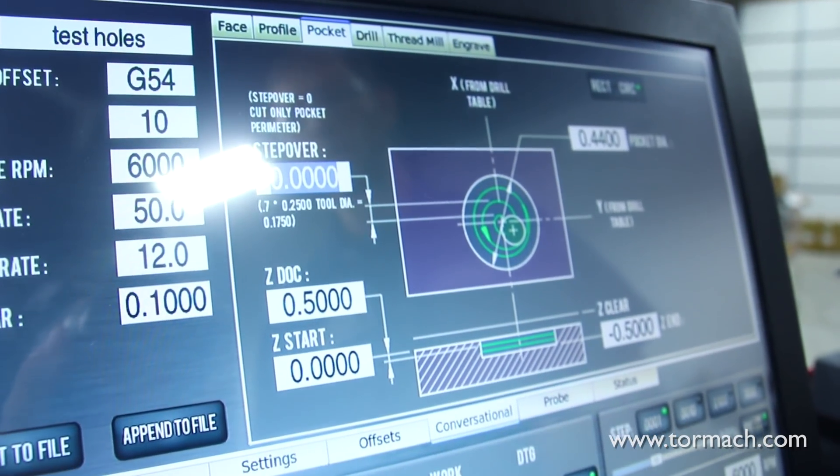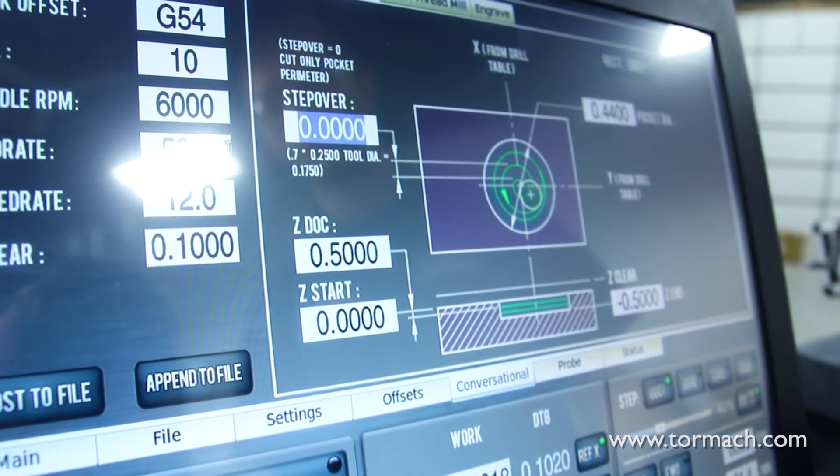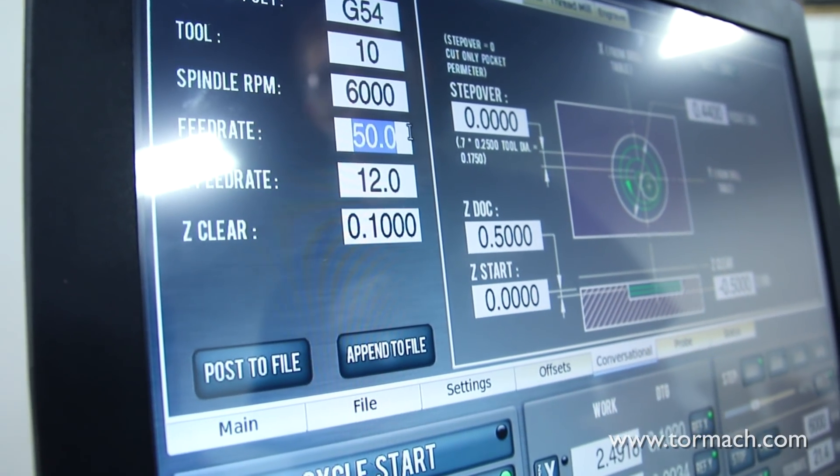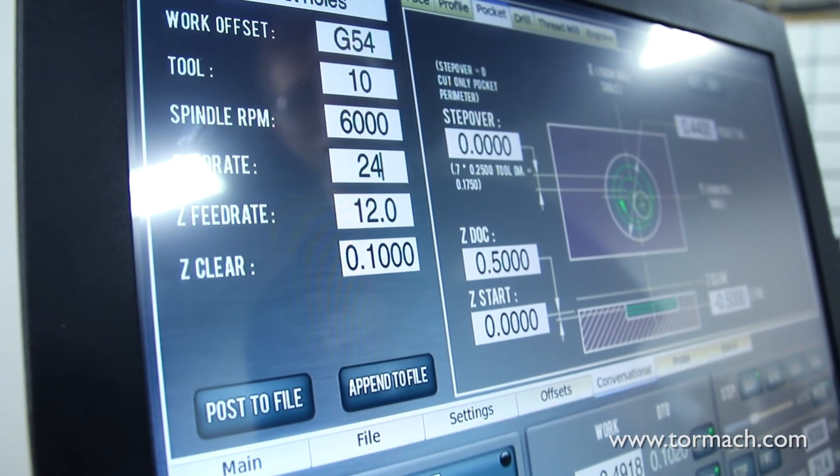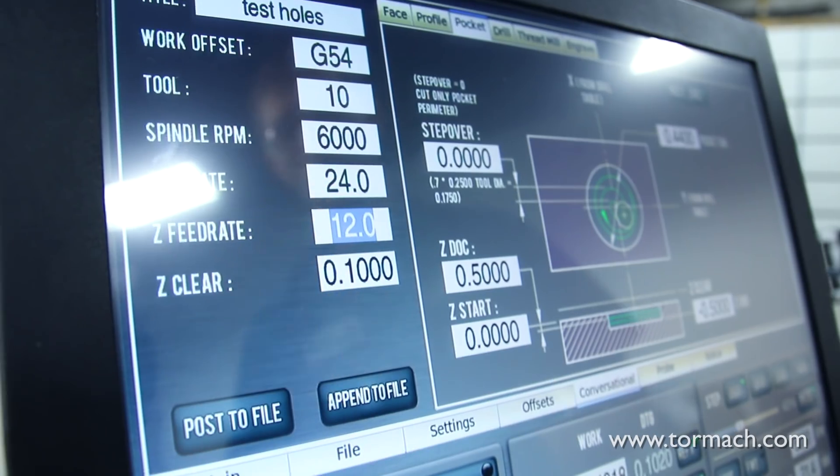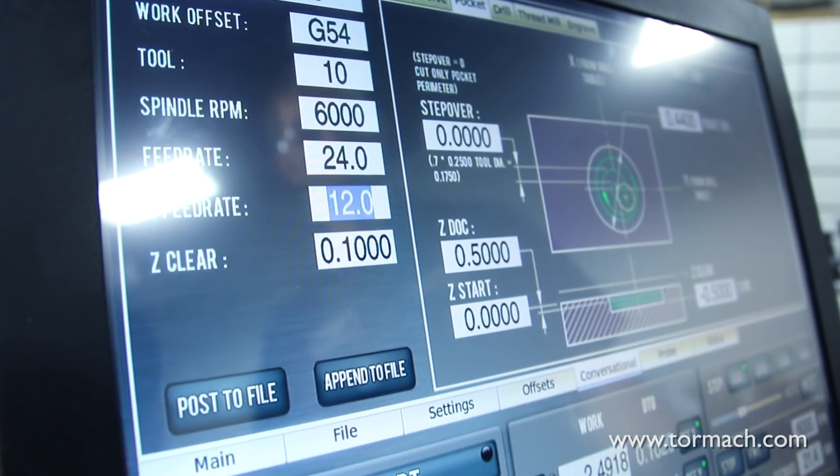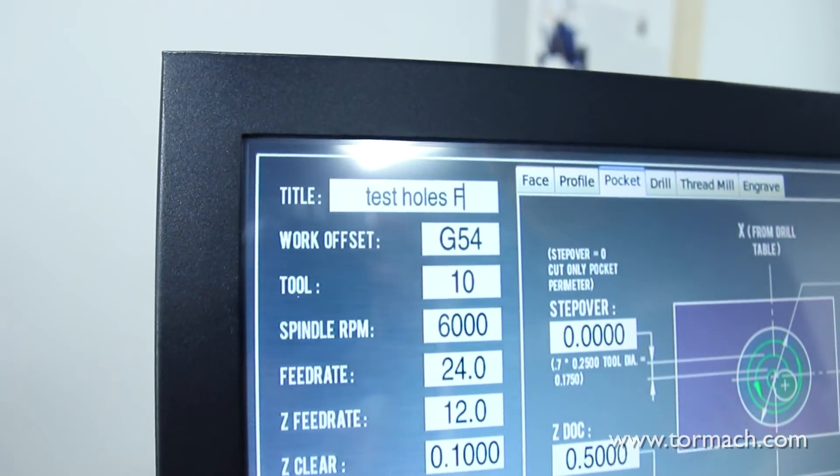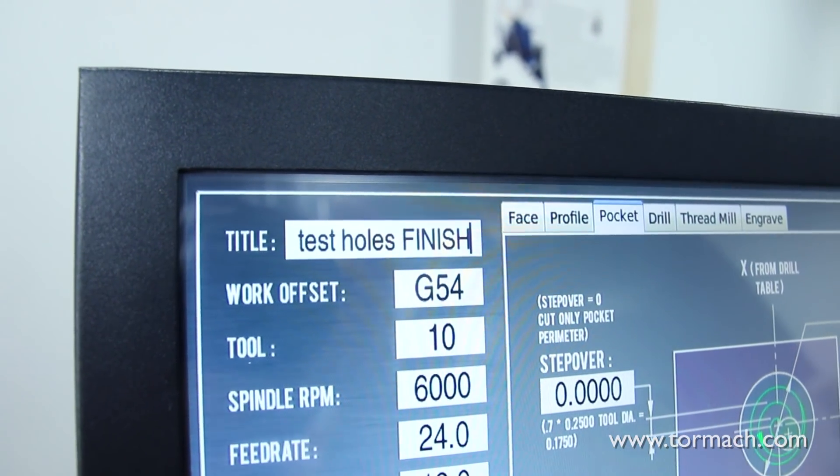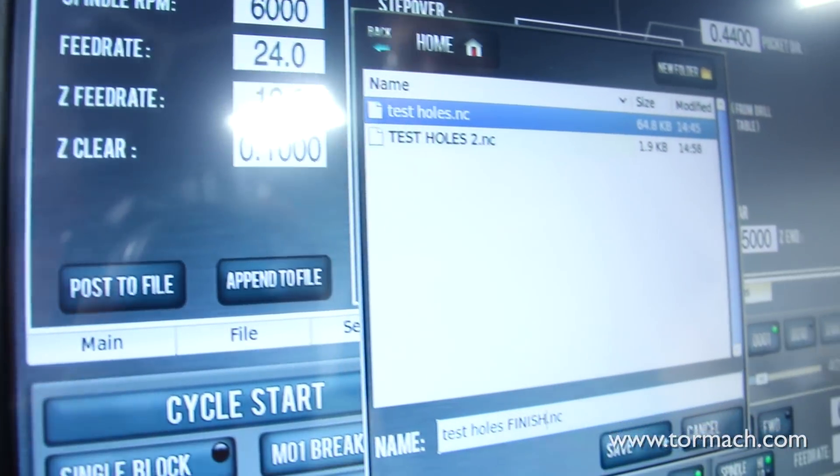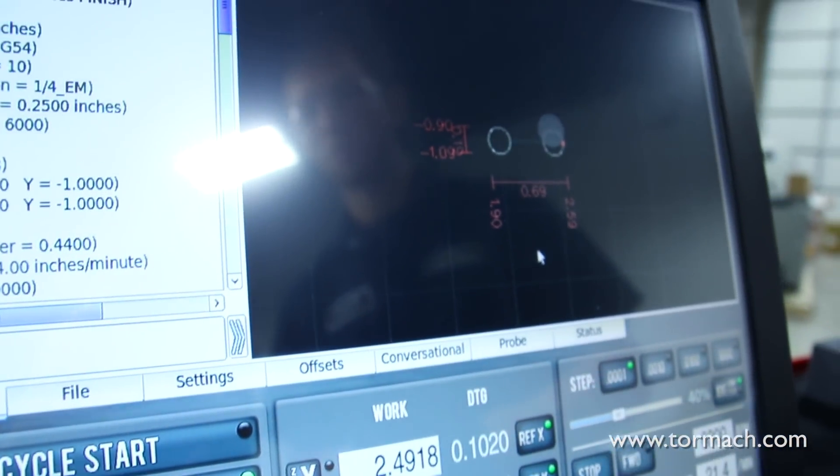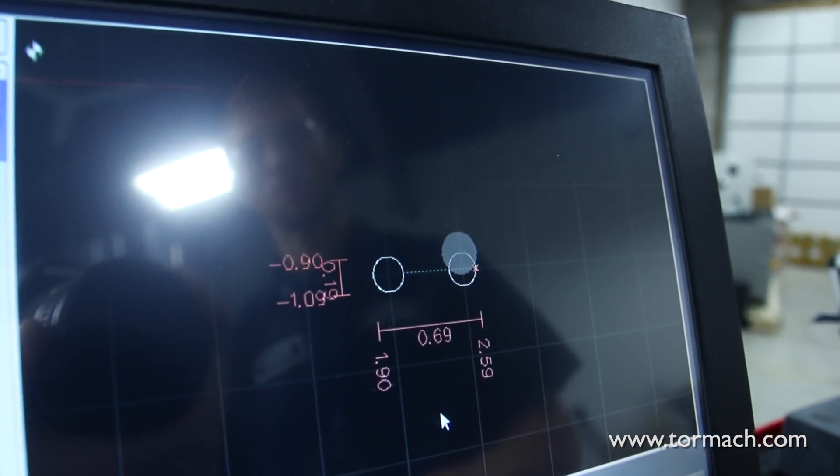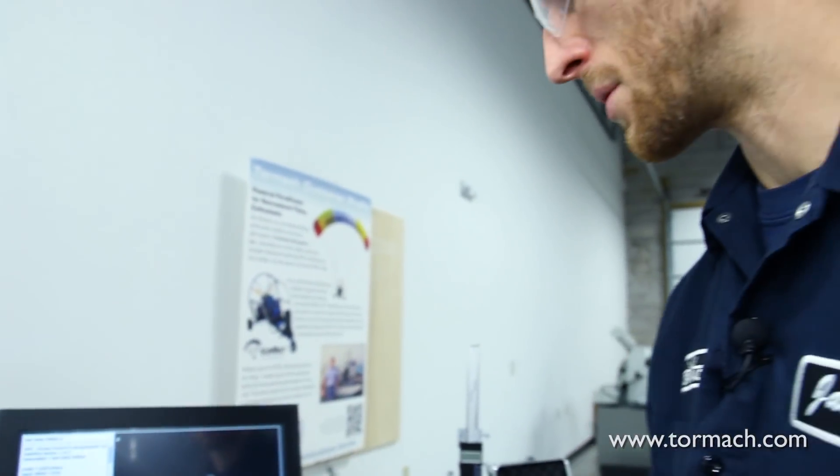I'm going to turn my feed rate down to that two thousandths per flute again, so we'll go back down to that 24 inches a minute. We'll call this test holes finish. We'll post this program, and we'll come in and take a quick finish pass just to clean that hole up a little bit larger.